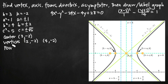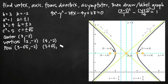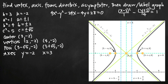Our foci are at (h minus c, k) and (h plus c, k), giving us (3 minus square root of 5, negative 2) and (3 plus square root of 5, negative 2). For our axes, the major axis runs through the vertices along the line y equals negative 2, and the minor axis runs vertically through the center at x equals 3.